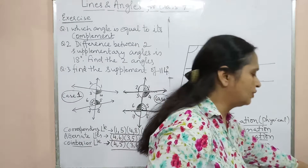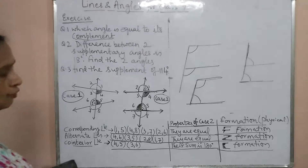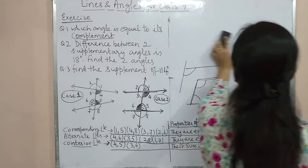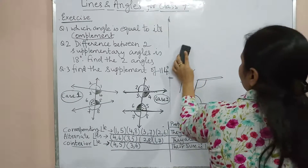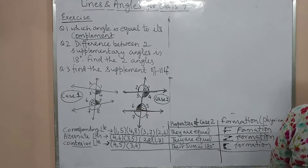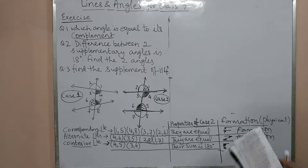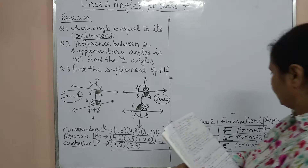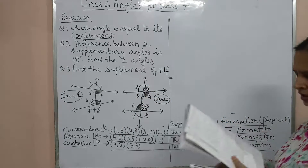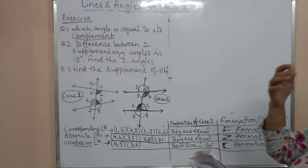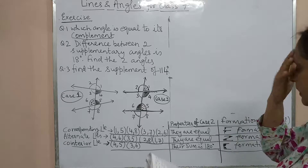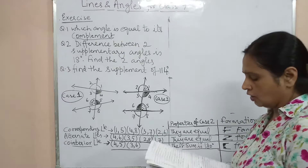We are going to solve some questions involving parallel lines cut by a transversal, and also cases where two lines intersect each other — vertically opposite angles and linear pairs. If two lines cross each other, opposite angles are equal (vertically opposite), and adjacent angles on the same line sum to 180 degrees (linear pair).